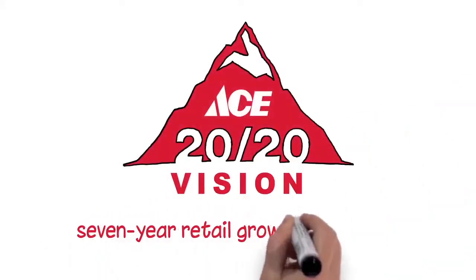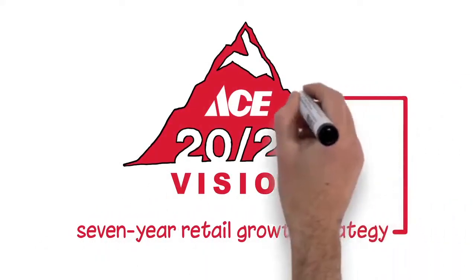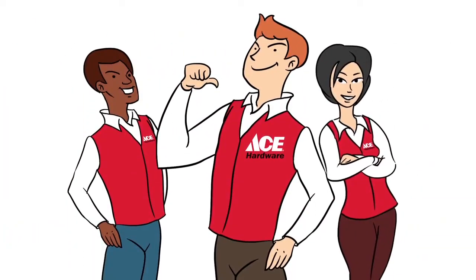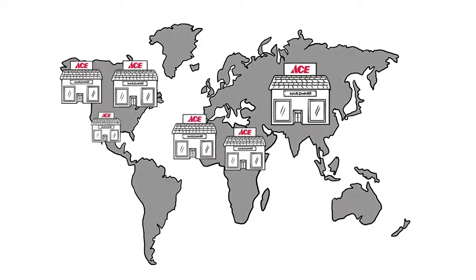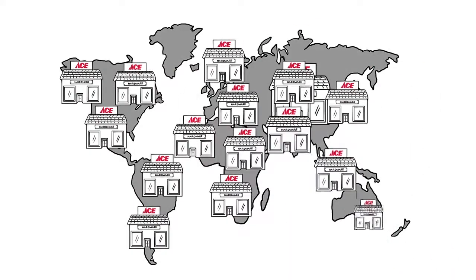2020 Vision is ACE's 7-year retail growth strategy and we're halfway through our journey. We want to be the best, most helpful hardware stores on the planet and this year's areas of operational focus will help get us there.